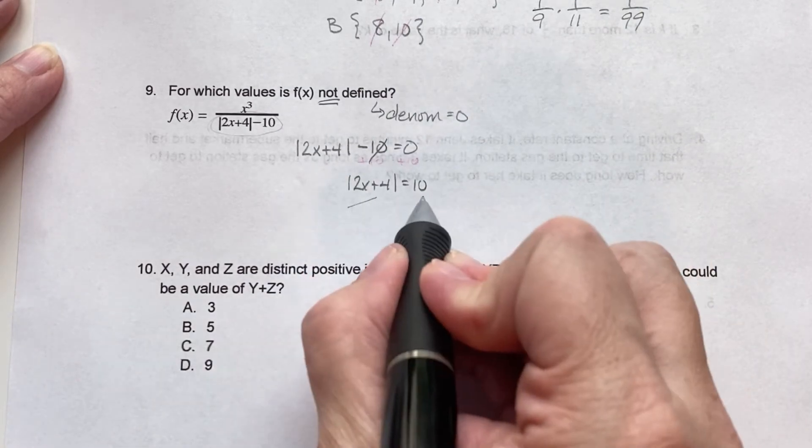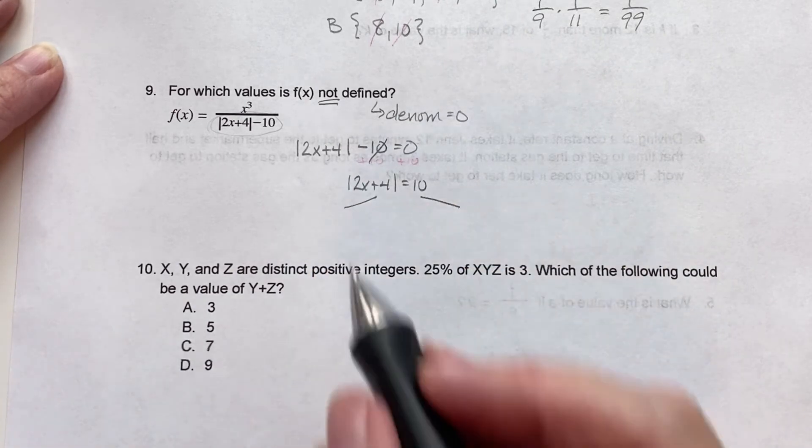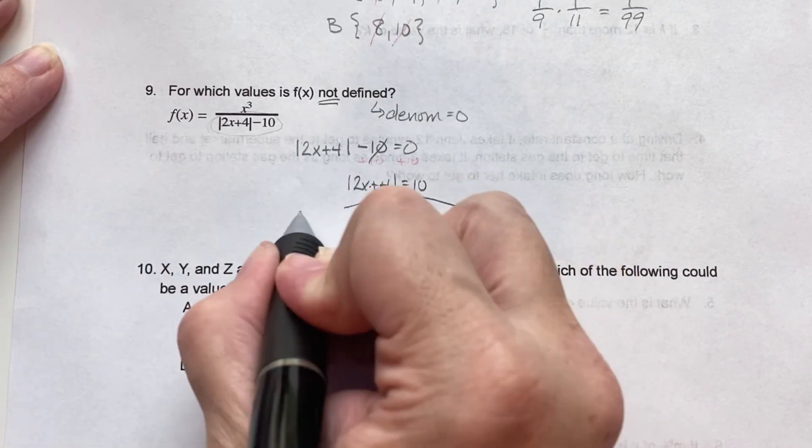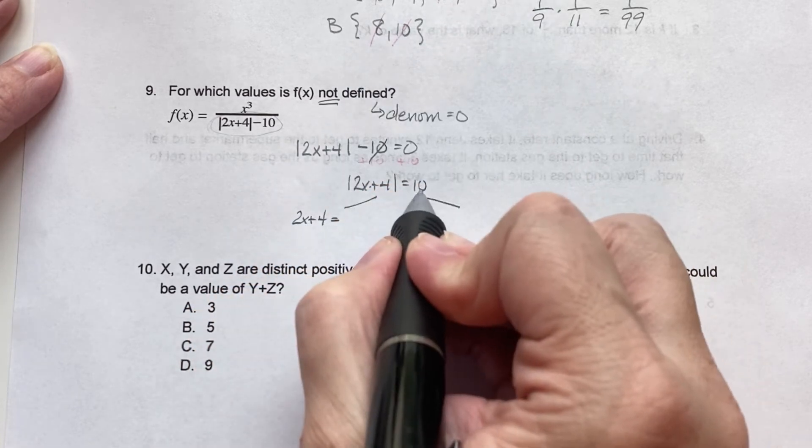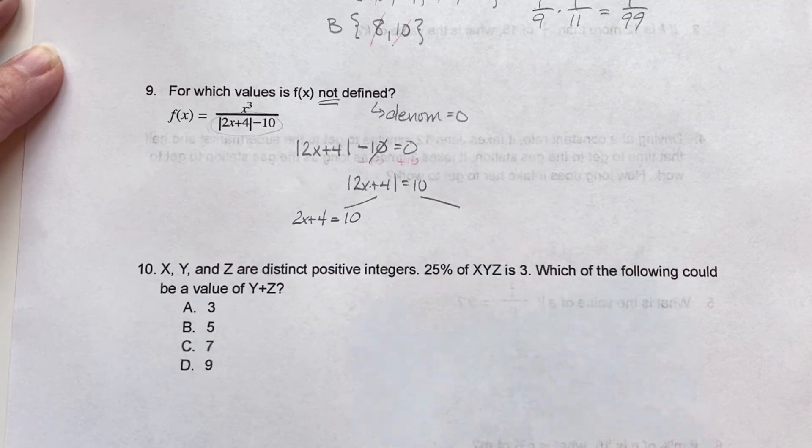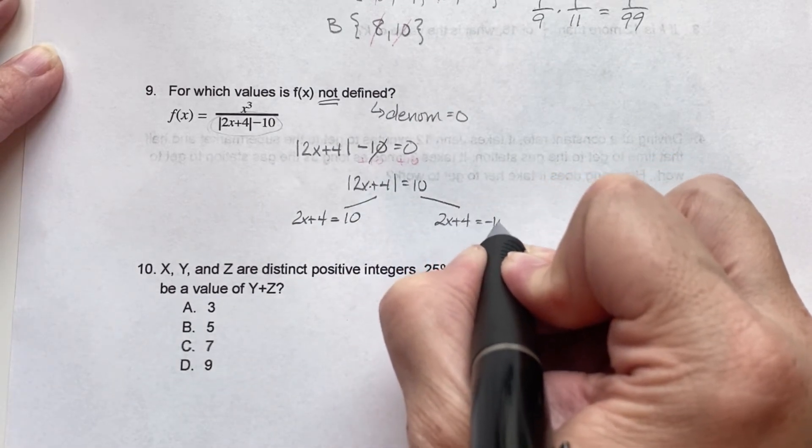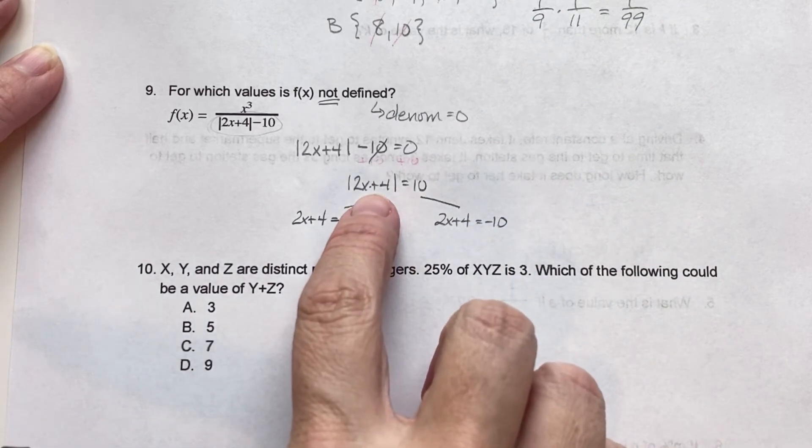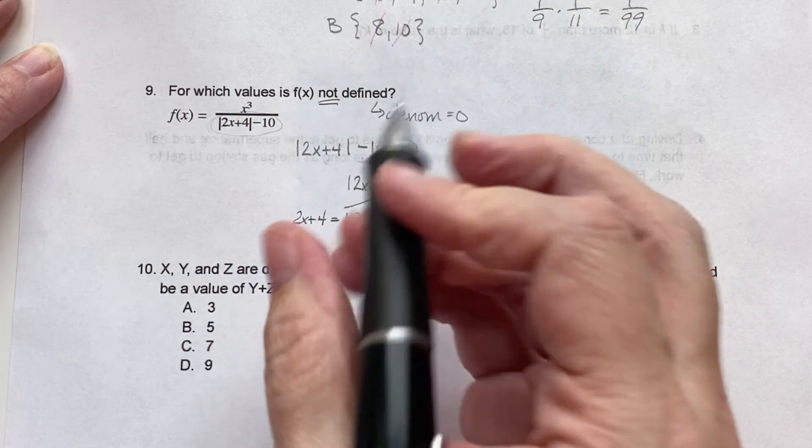But since we don't have anything in front of this absolute value, we can go on to the next step. So at this point, we're going to separate it into two different equations. Now the interior of the absolute value always stays the same. And the first is going to be exactly what it is. And then 2x plus 4 also equals negative 10. Because remember, if you put a negative 10 inside absolute value, it'll still come out positive.